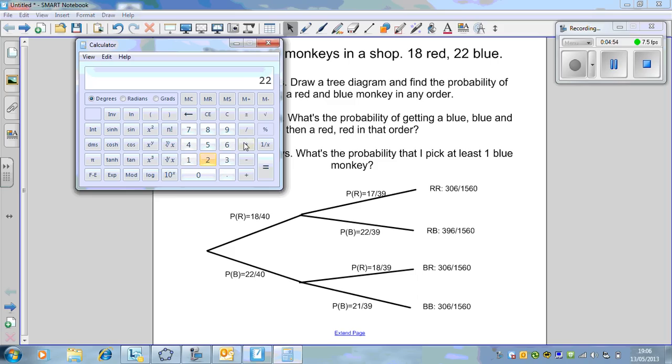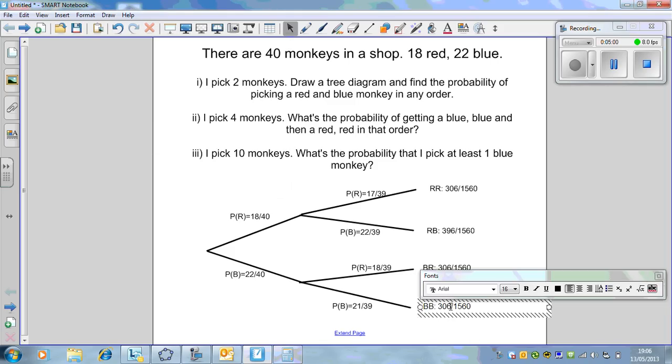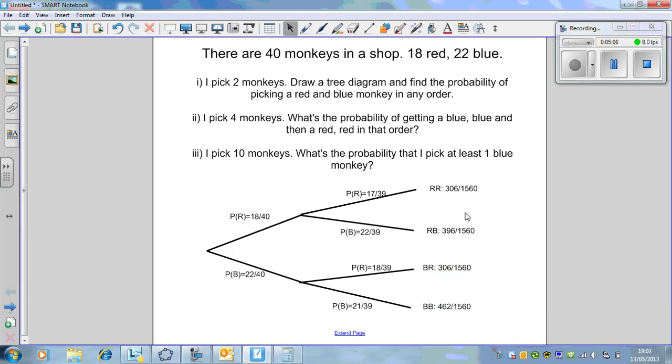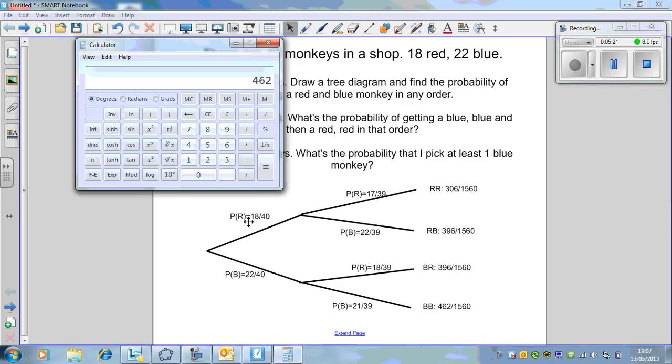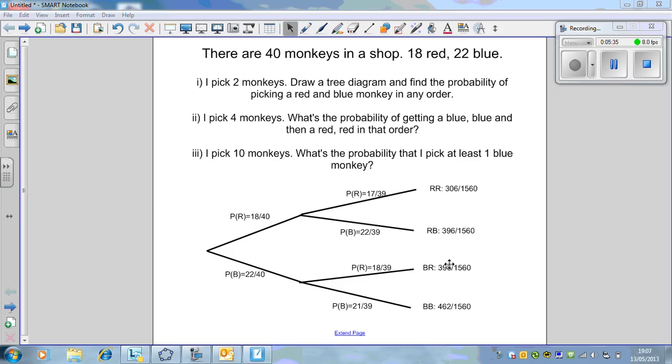This one here is when we have red and blue. It's still going to be over 1560 because the denominators are the same, but now 22 times 18 is 396. The next one is blue then red, 22 times 18 again, so 306.